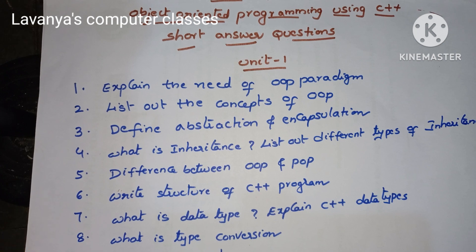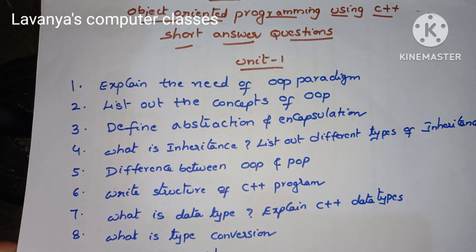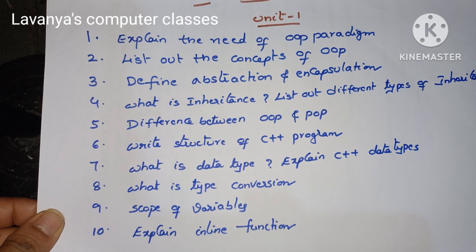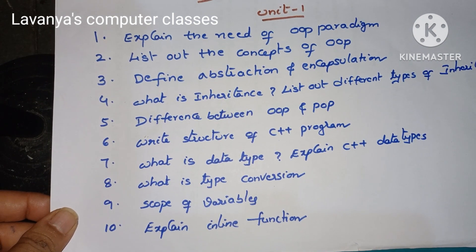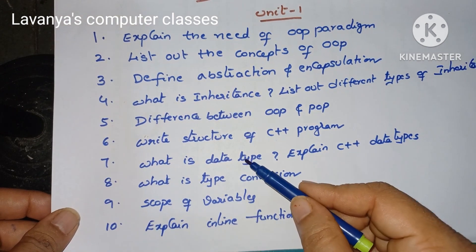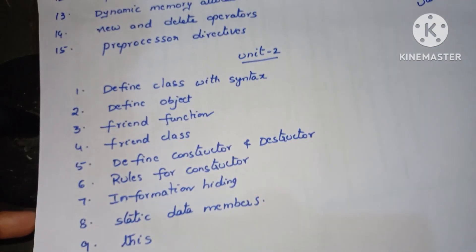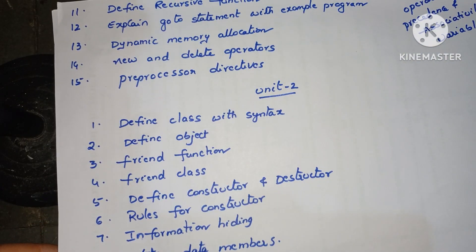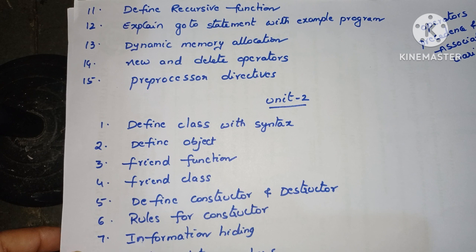Next, what is type conversion or type casting? Very important question. Define what is scope and explain the scope of variables — very important question. Next, explain inline function. These topics are especially concentrated in C++, because data types and type conversion are already covered in PPS also. Next, define recursive function — very important question.